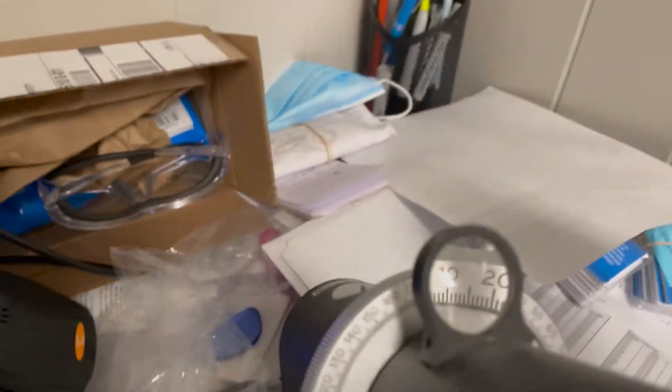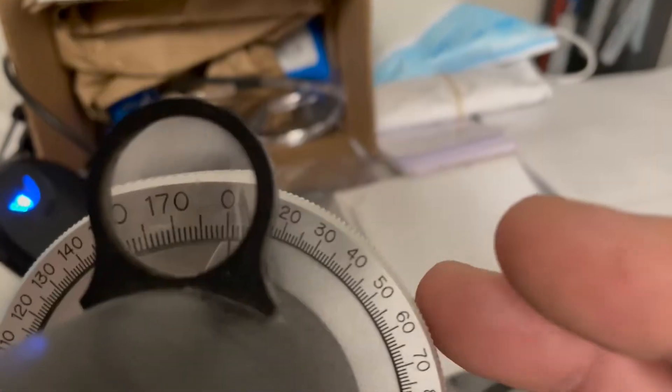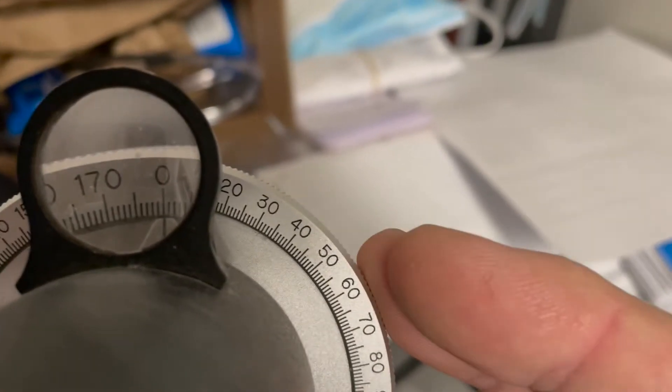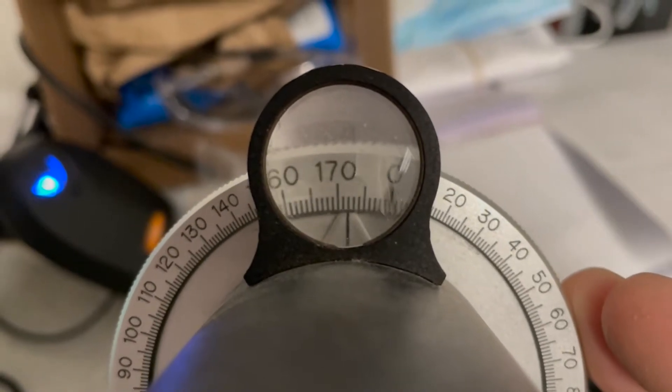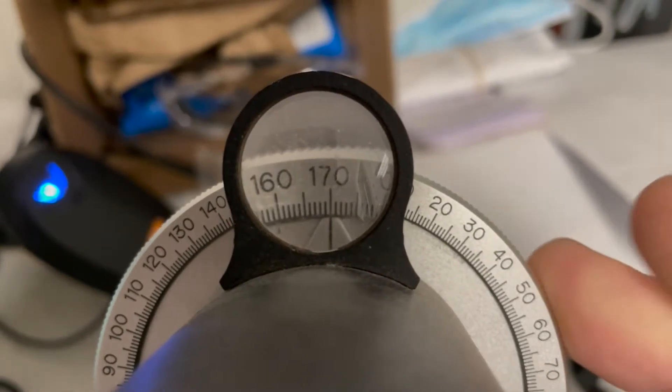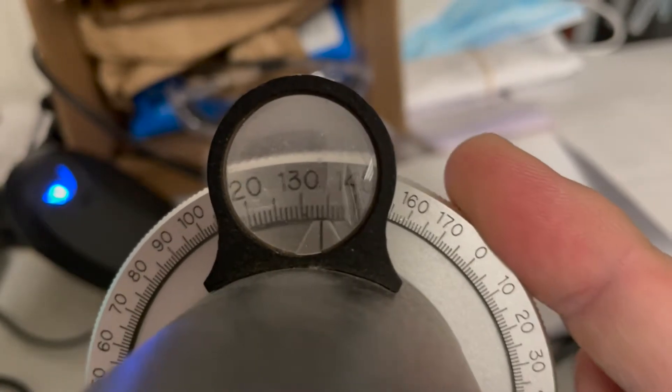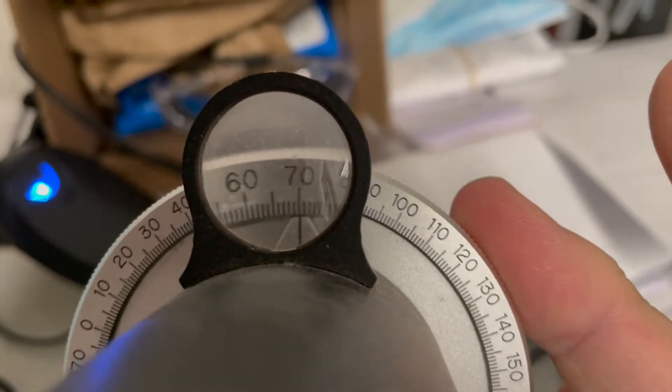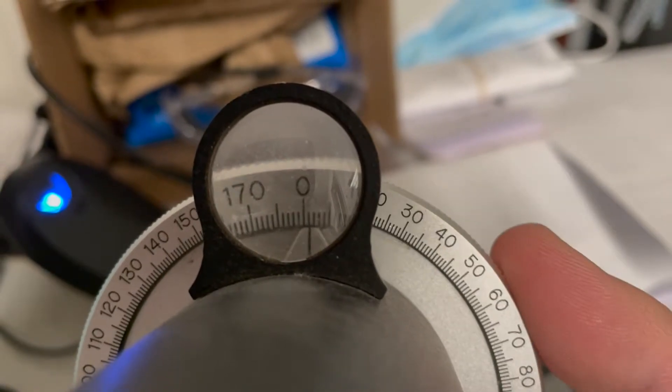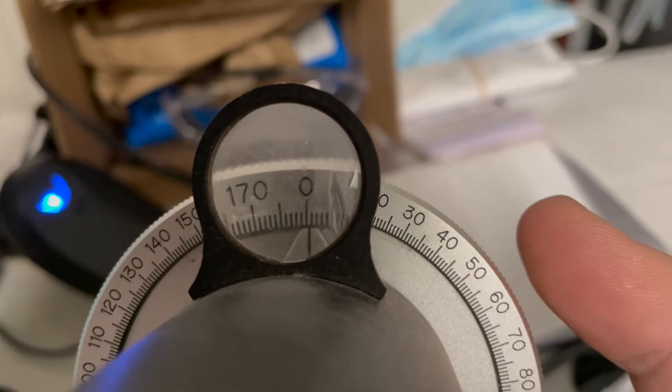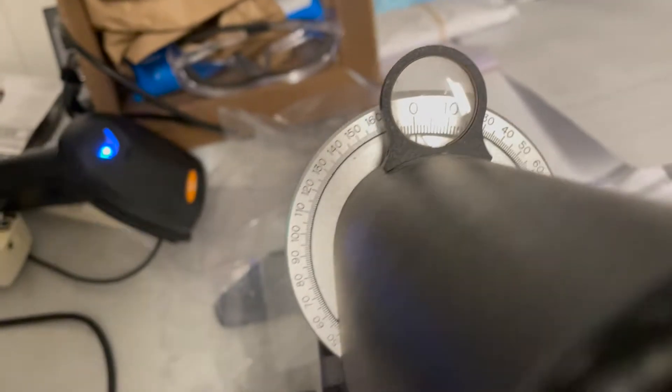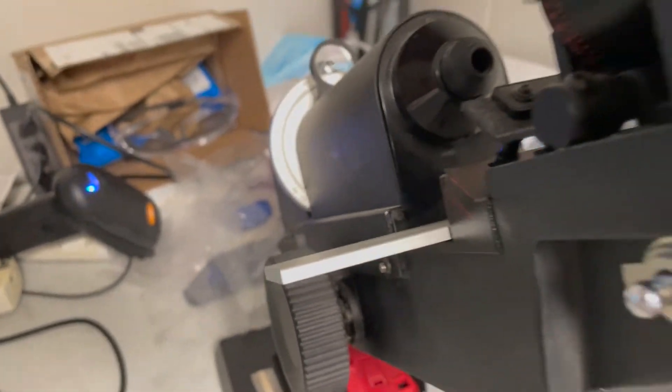This is your axis wheel right here and this is what you'll use to check the axis and also set the axis if you're spotting. So this same lens meter we're going to use to either spot lenses or check lenses after they're already mounted in a frame.